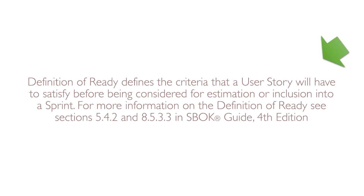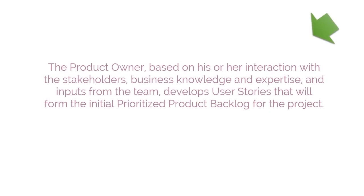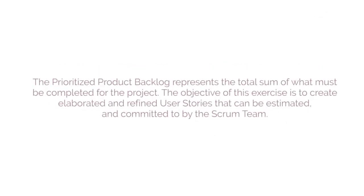The Definition of Ready defines the criteria that a user story will have to satisfy before being considered for estimation or inclusion into a sprint. For more information, see Sections 5.4.2 and 8.5.3.3. The tool that must be used in this process is user story writing expertise. The product owner, based on interactions with stakeholders, business knowledge, and team inputs, develops user stories that form the initial Prioritized Product Backlog.